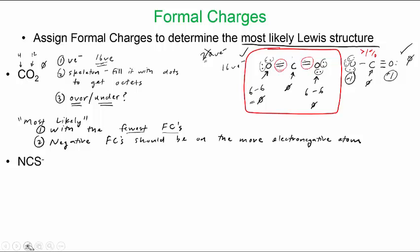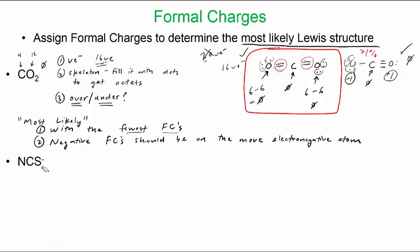Let's try another practice: the thiocyanate ion. We'll try to pick the most likely Lewis structure. Valence count: nitrogen has five, carbon has four, sulfur has six, plus one extra for the negative charge — that gives seven plus four plus five equals sixteen valence electrons.